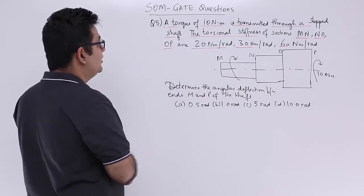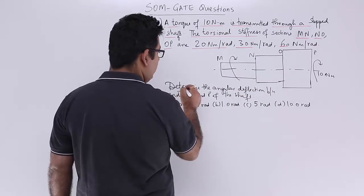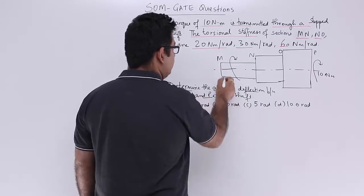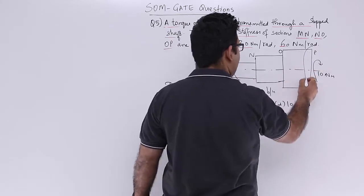So for a series shaft, we need to find out the angular deflection between ends M and P of the shaft. So between this and this.